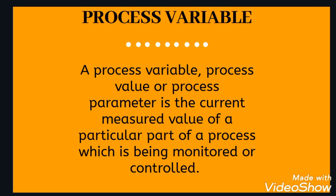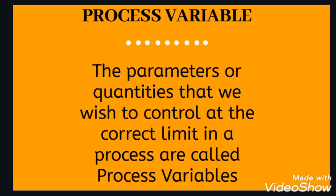What is a process variable? A process variable, process value or process parameter is the current measured value of a particular part of a process which is being monitored or controlled. In another way, we can say the parameters or quantities that we wish to control at the correct limit in a process are called process variables.